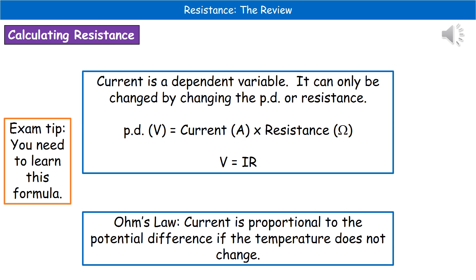What we need to remember is if you want to change the current within a circuit, you can't do that directly because it's a dependent variable. The only way you can change the current within a circuit is by actually changing either the potential difference or the resistance. By doing that change to one of those, the current then changes in turn.